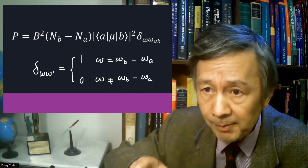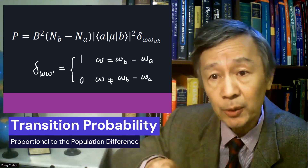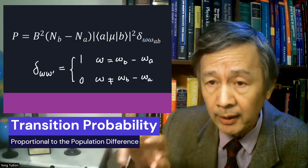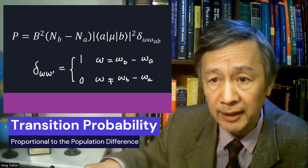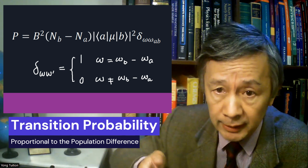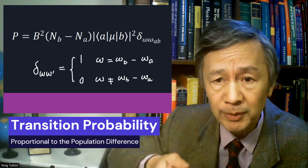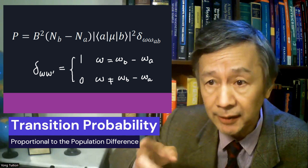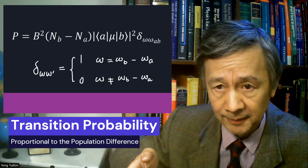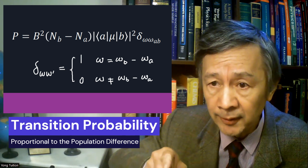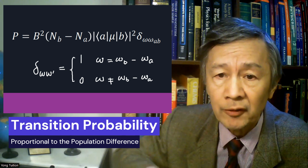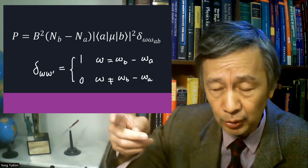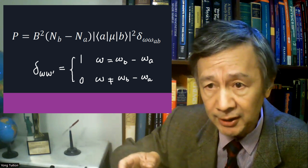Here is a compact notation: P sub I equals b squared times the population difference times the square of the interaction matrix element, where b is the excitation field strength — could be magnetic or electric field. N sub B minus N sub A denotes the population difference. The Kronecker delta denotes the resonance condition. For example, if the omega frequency is not equal to the frequency difference between the two energy levels, then no transition at all.